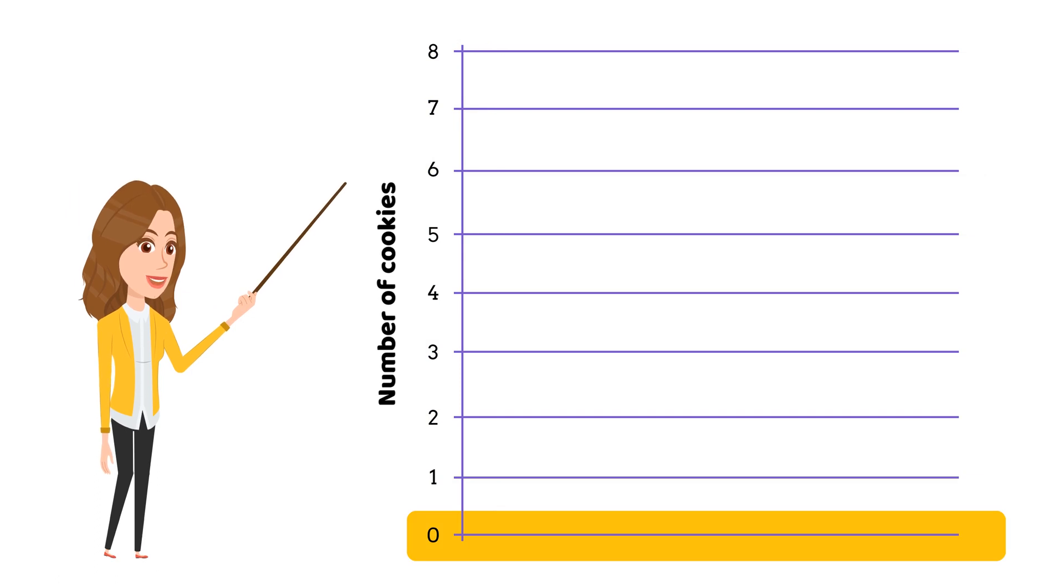And this line going across is the horizontal axis. It's like the line that goes left to right. On this axis, we put the names of the things we're comparing. In our case, it's the names of the cookie jars.